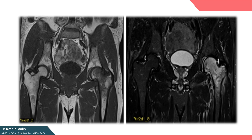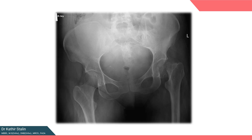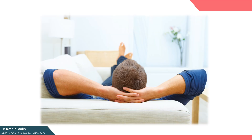Bone scan can show increased uptake in the femoral head, and these changes precede X-ray changes. X-ray, if at all useful, helps diagnose complications of this disease. For example, as seen in this case, there is a pathological fracture of the femoral neck due to gross osteopenia and osteolysis at the hip region.